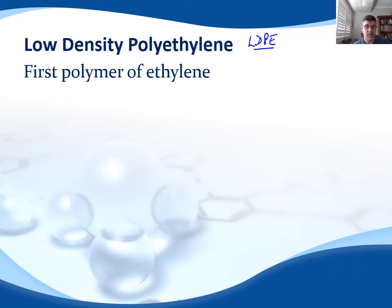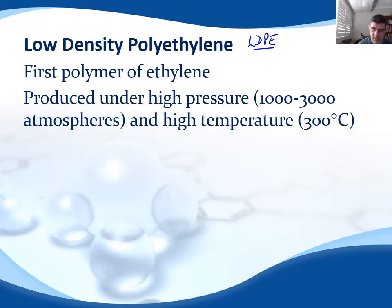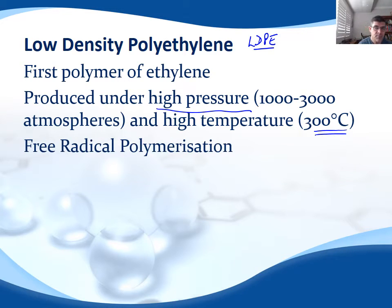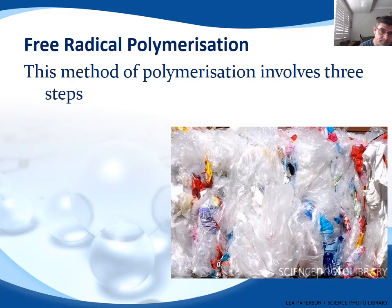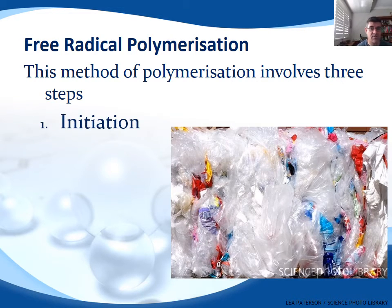LDPE was the first polymer of ethylene that was made, and it's produced under high pressures — one to three thousand atmospheres — and also relatively high temperatures of 300 degrees C. It involves what we call free radical polymerization, because free radicals are actually produced in this process. Free radical polymerization is basically a three step process.